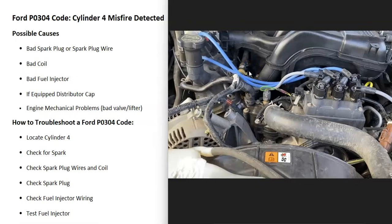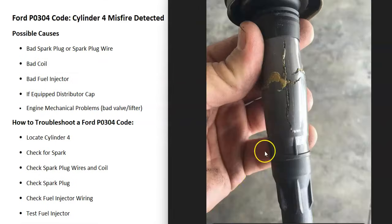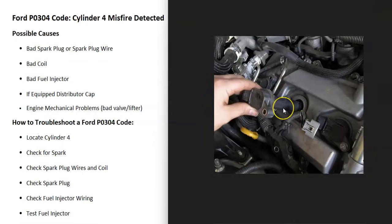Also check the spark plug wire going to spark plug number four — be sure it's connected well and there's no damage. You can also check the coil going to cylinder number four, including coil packs and ignition coils. If you have ignition coils, pull it out and check for any damage, grease, or buildup. You can also swap it with the coil from the cylinder next to it and see if the code follows. For example, if you swapped the ignition coil with cylinder number three and then get a P0303 code, you know it's a bad ignition coil.